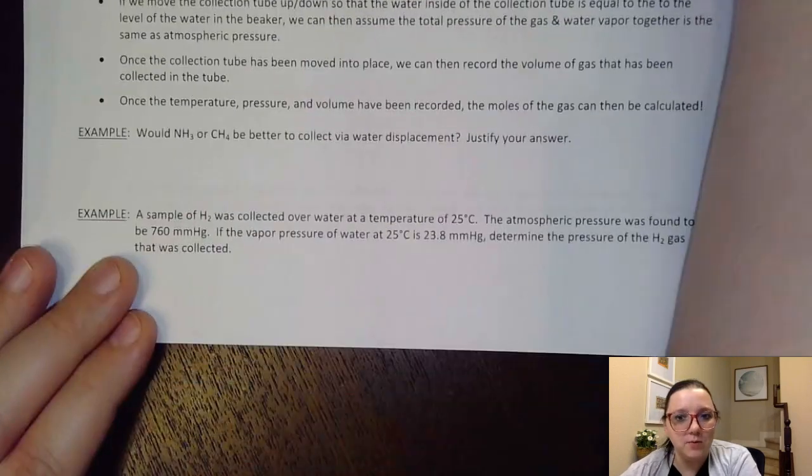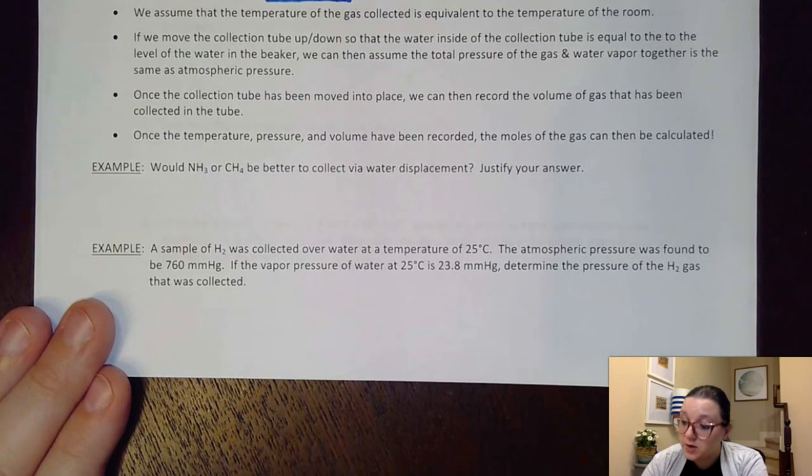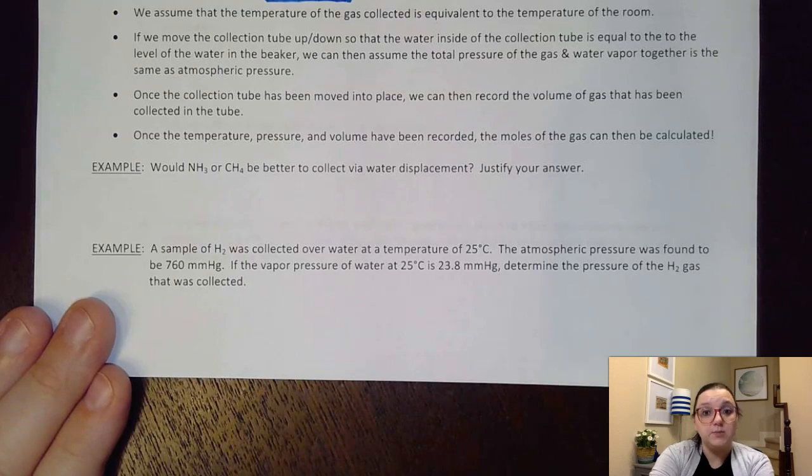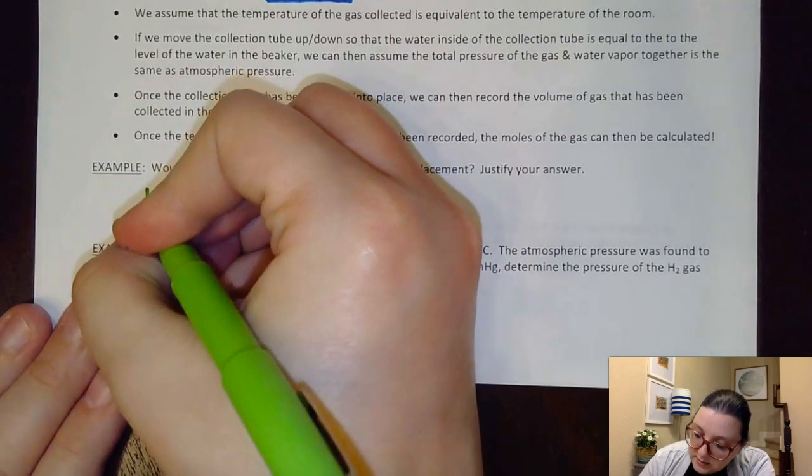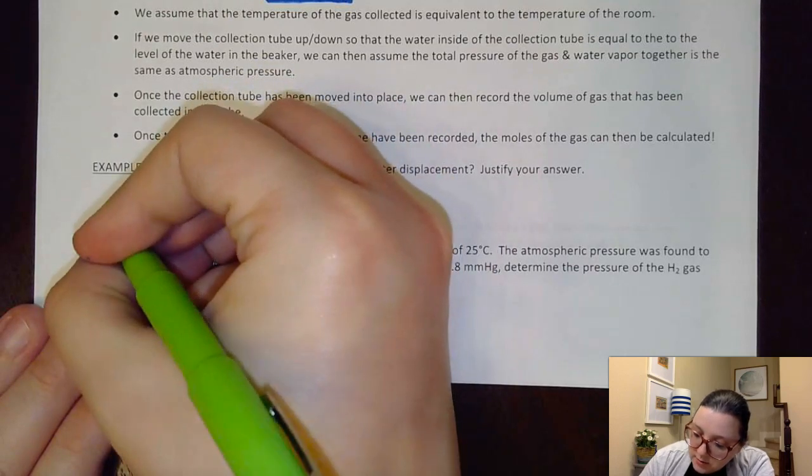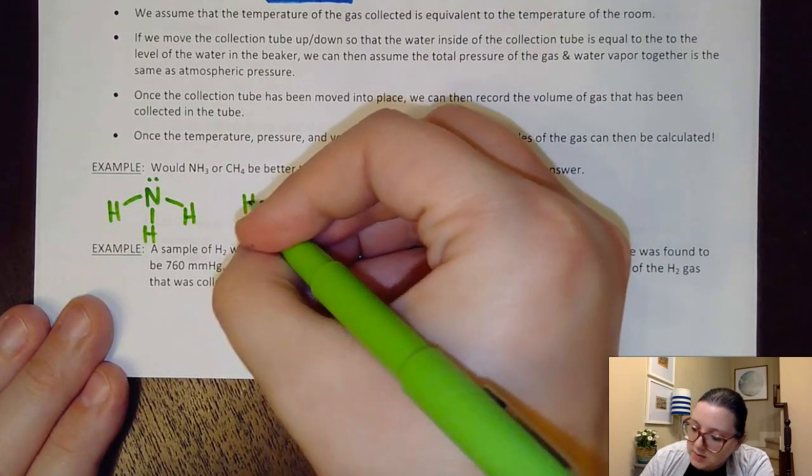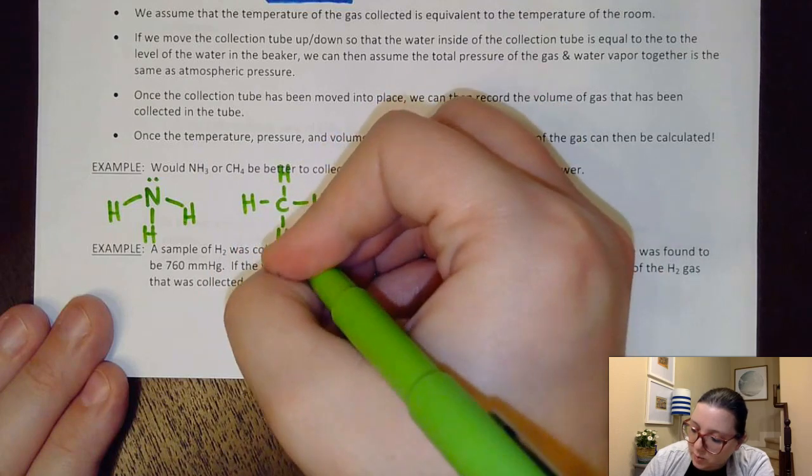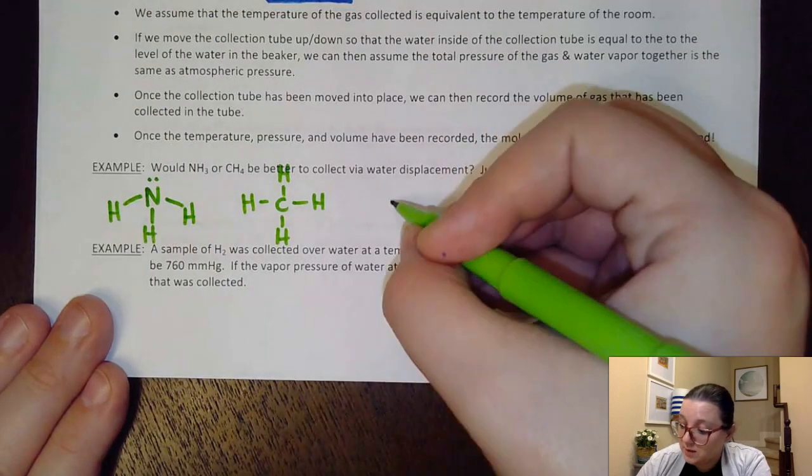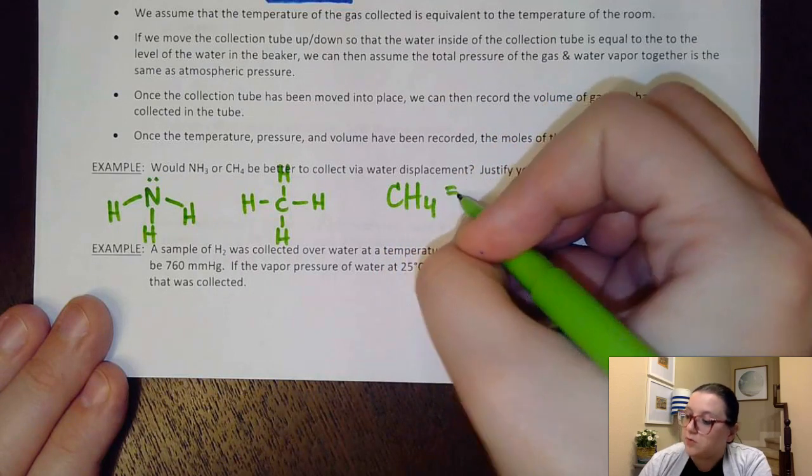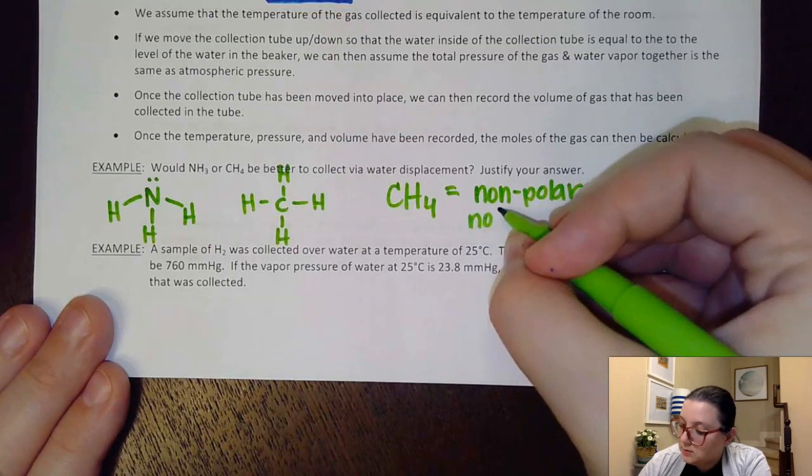So let's look at some problems that would be addressing the collection over water. First off on this question, it says, would it be better to use NH3 or CH4 to collect via water displacement and justify your answer? And this is where, again, it depends on if that gas is polar or non-polar. Ammonia gas has a Lewis dot structure that looks like this, whereas CH4 is all carbons and hydrogens. And as we know, that tends to be non-polar, whereas our ammonia over here was polar. So the better one to collect via water displacement would definitely be the CH4. And again, the reason why is that it's non-polar and so it will not dissolve in the water.